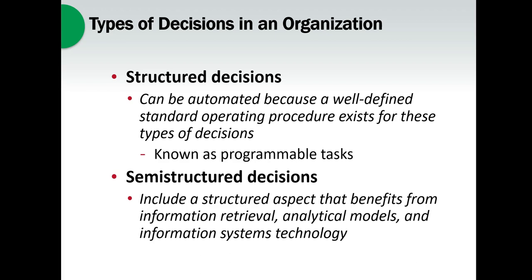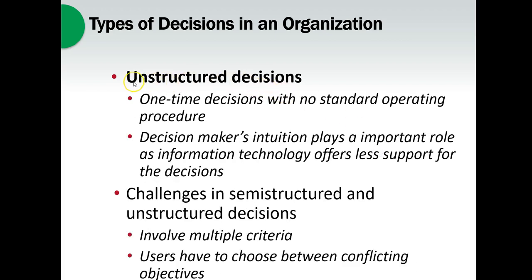Some decisions are very structured. For example, at a grocery store, if items arrive on a truck, somebody has to quickly decide: do we accept them, take them into inventory, or send them back? These very basic tasks can be programmed. Others are semi-structured - they have some guidelines but also require human judgment. The more structured a decision is, the easier it is to write a program to make an automatic response.